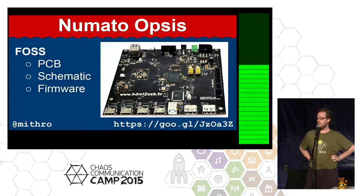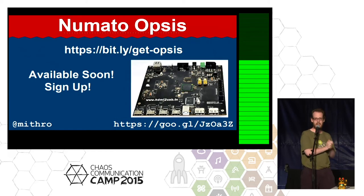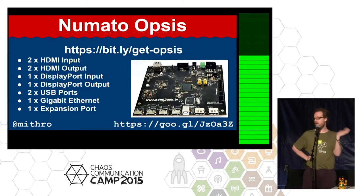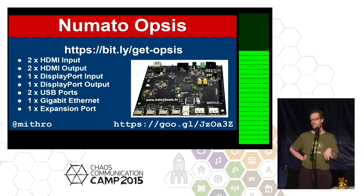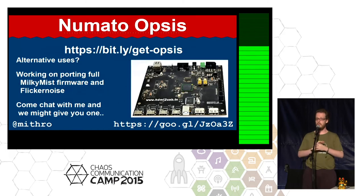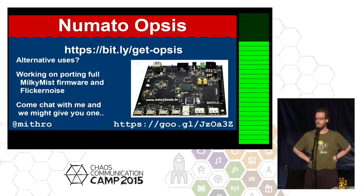We've also developed open hardware because it doesn't matter if your firmware is open if your hardware isn't. We're about to try and get these available — you can go to get Opus and get one. It has two HDMI inputs, two HDMI outputs, DisplayPort in, DisplayPort out, USB, and gigabit ethernet. It's great if you want to do any type of video stuff. It could also be used for other things like milky mist or flicker noise — we'd love for you to take a look at this board and see if you can do something interesting.